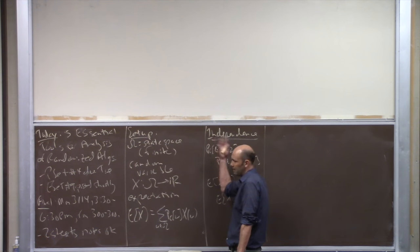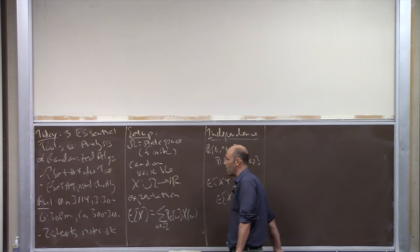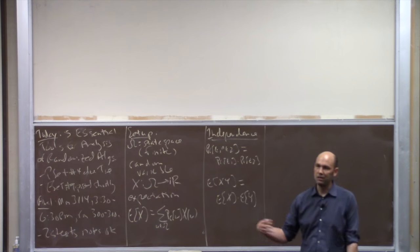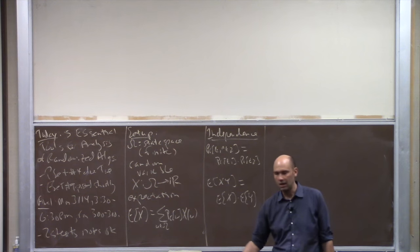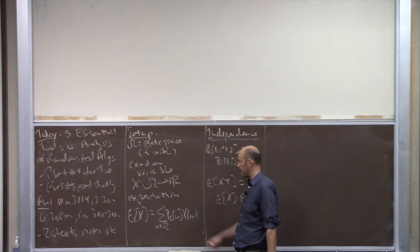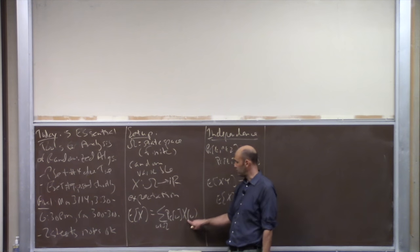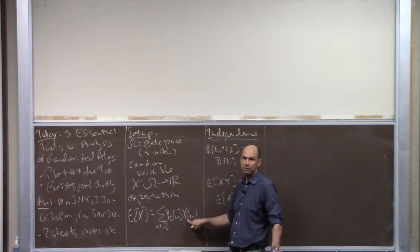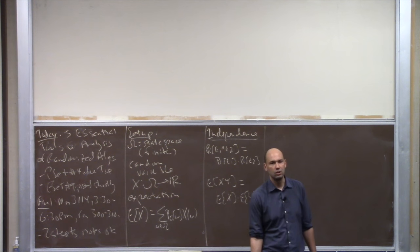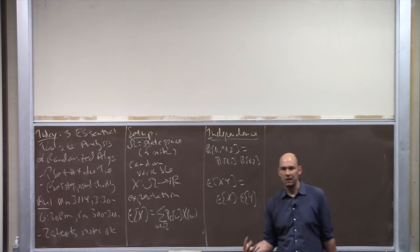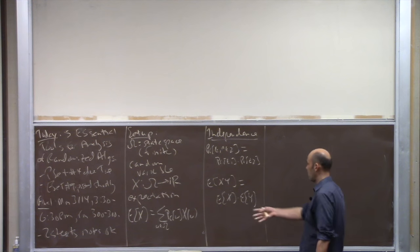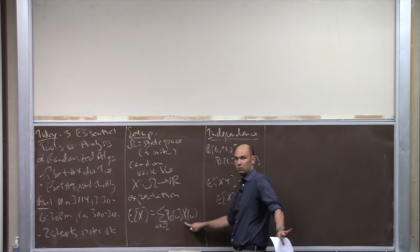For a fixed problem instance, we might be interested in the running time as a function of the coin flips made by the algorithm, or the objective function value of the solution produced. Those are the random variables we care about in algorithm analysis. The first thing you want to know about a random variable is what it is on average — the expectation. You average the possible values weighted by whatever probability distribution you assume on the state space.